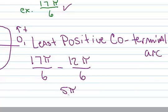And I end up with 5π/6. 5π/6 is my least positive coterminal arc.